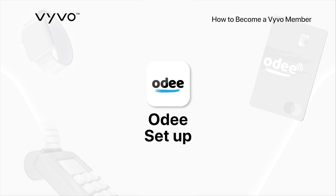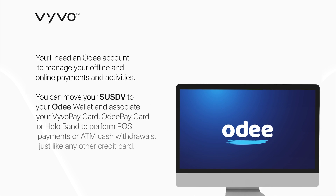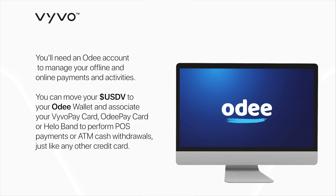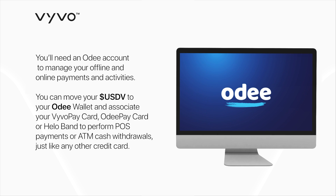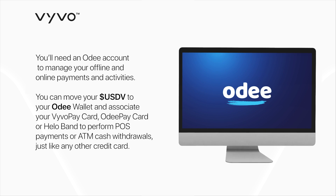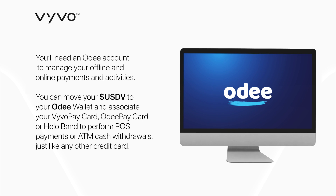OD Setup. You'll need an OD account to manage your offline and online payments and activities. You can move your USDV to your OD wallet and associate your VivoPay card, OD Pay card, or HiloBan to perform POS payments or ATM cash withdrawals, just like any other credit card.